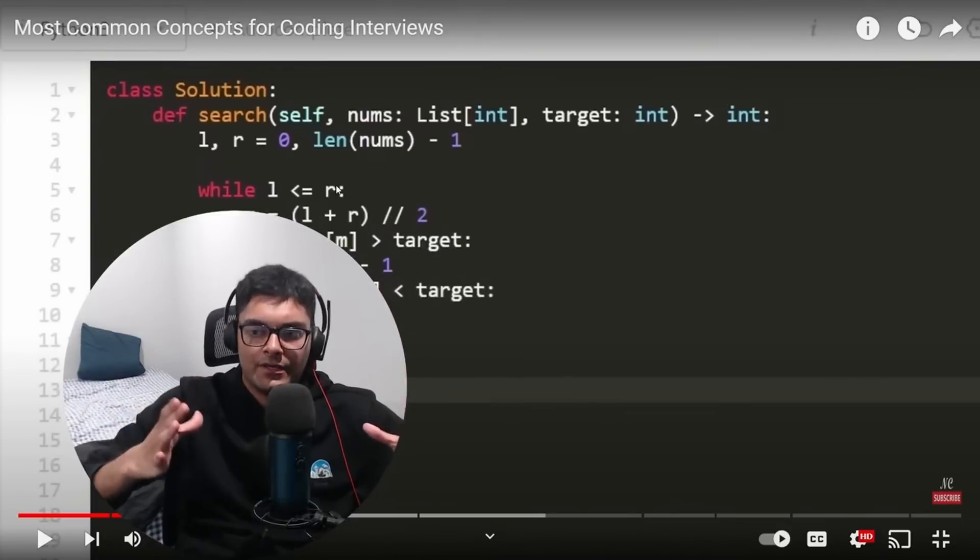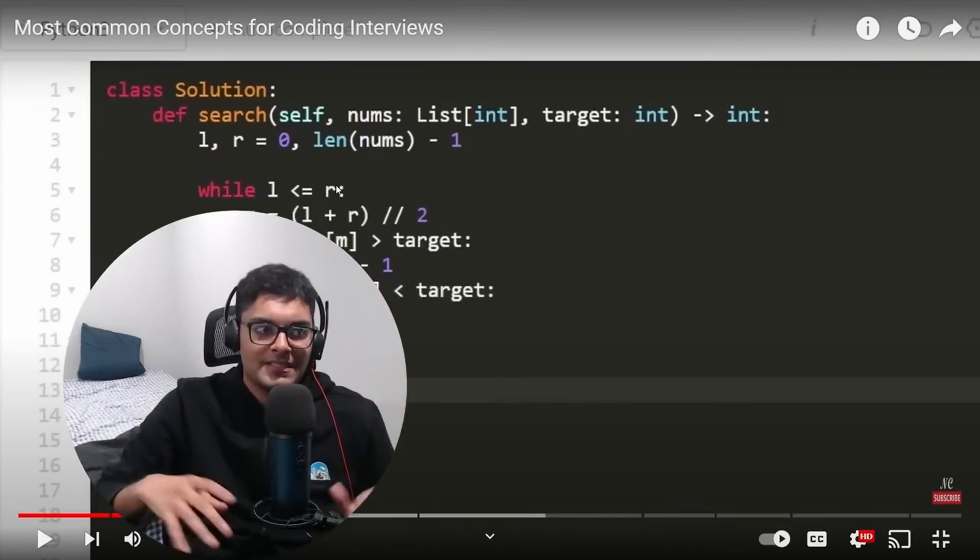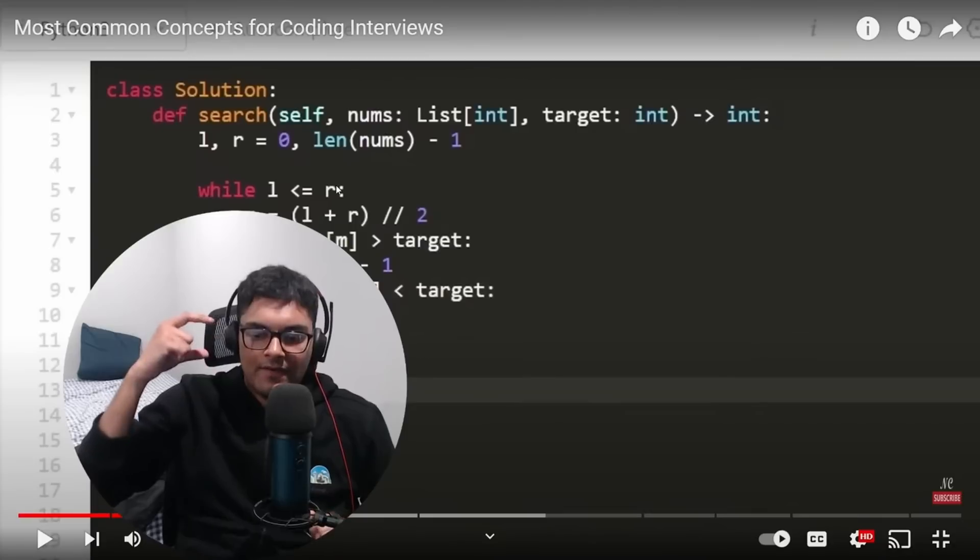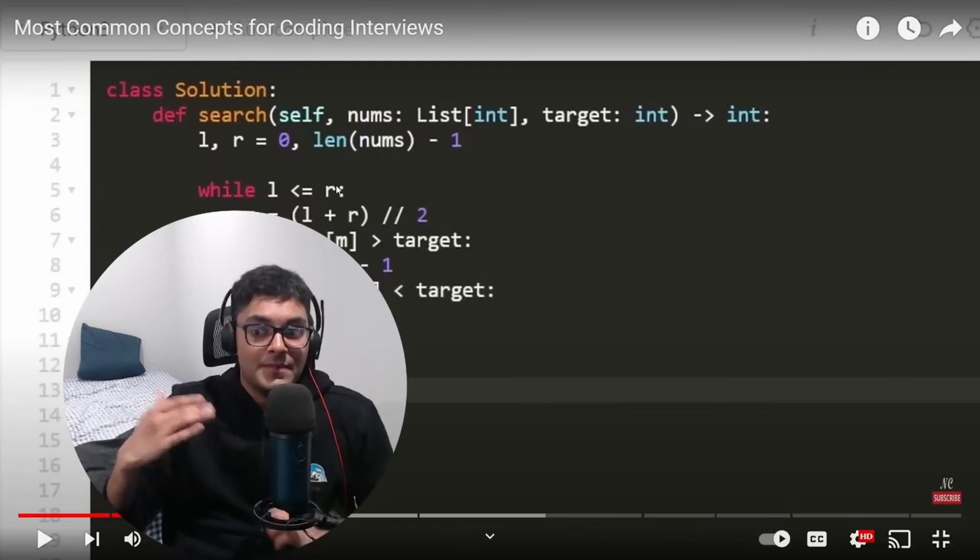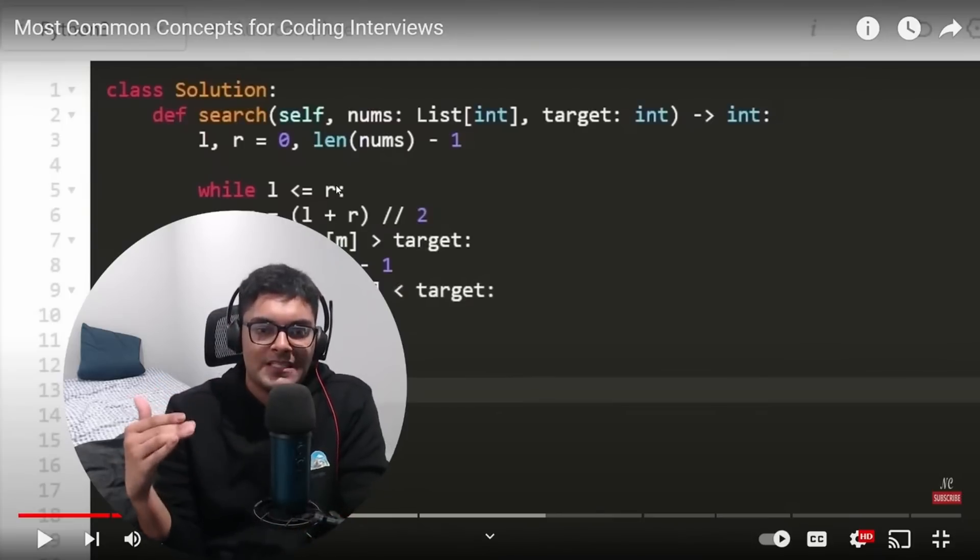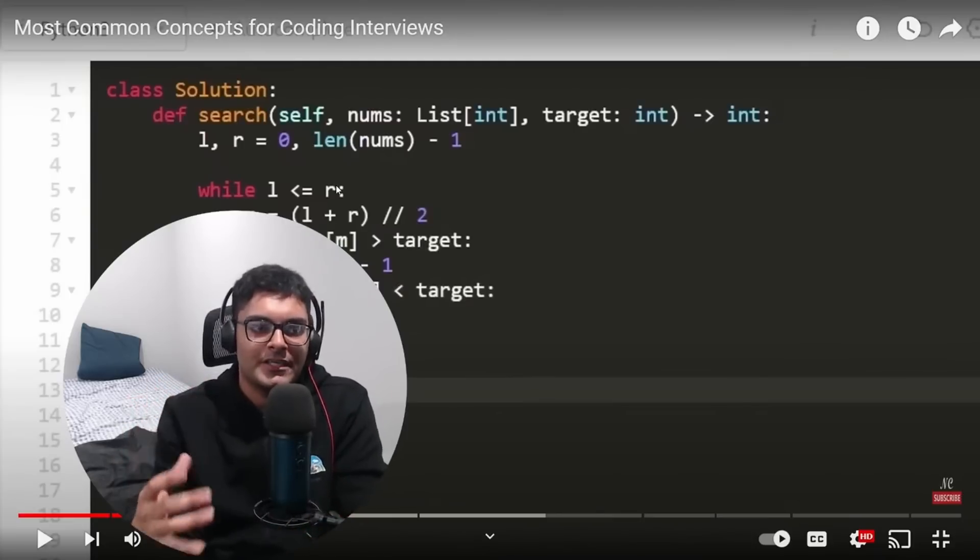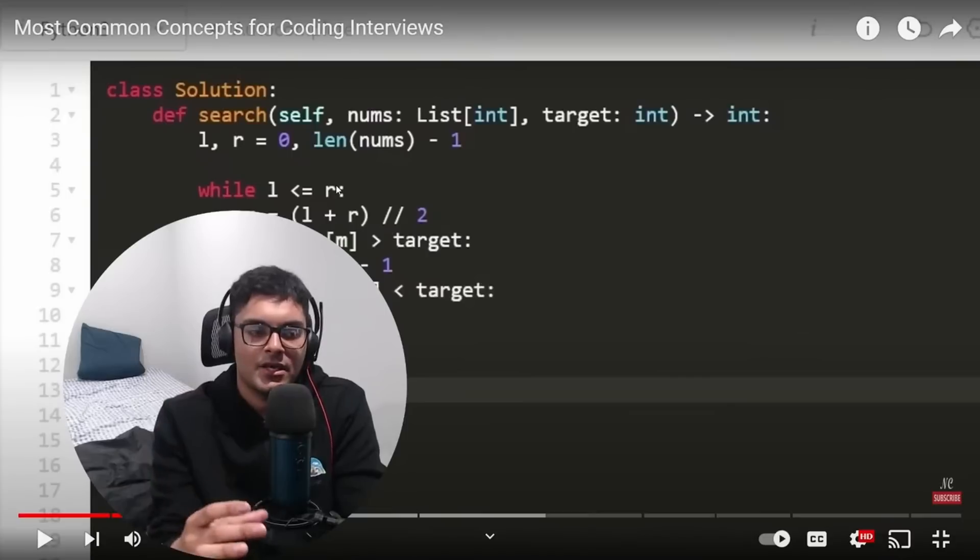When you're first learning how to code, writing out for loops and things like that takes cognitive energy. It's not second nature. Like writing out variable names, especially when you're learning a new language for the first time, there's friction in just getting your thoughts into code.